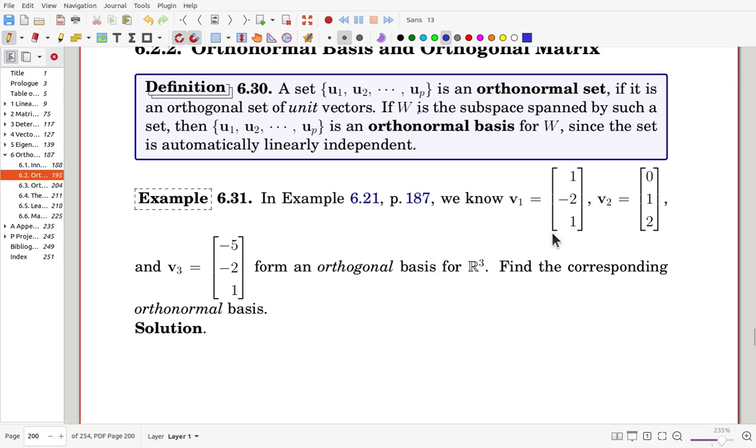They are already orthogonal and non-zero, so once they are normalized, then they will be orthonormal. So we will just normalize them. u1 is from v1 divided by its length. So that is normalization. Now, the norm is square root of 6, so 1 over square root of 6, and v1 is [1, -2, 1].